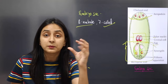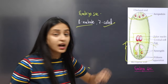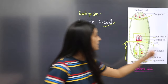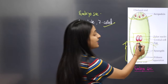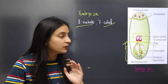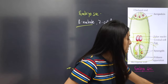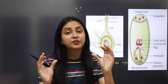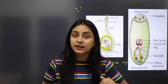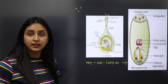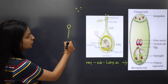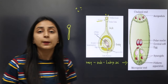We have studied the structure of the embryo sac. Inside it is the female gamete - the egg. Now, the male gametes need to fuse with this egg. In the process of double fertilization, pollen grains land on the stigma of the female reproductive organ, and they form a tube-like structure called the pollen tube.